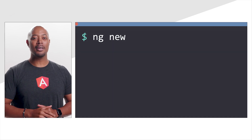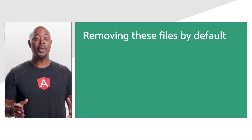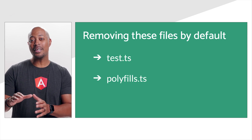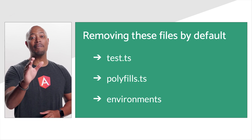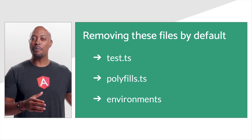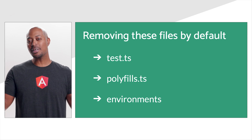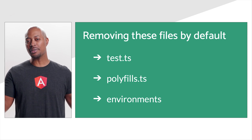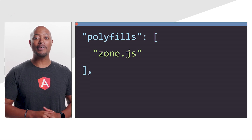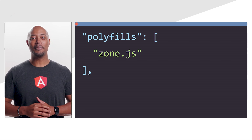We want to streamline the output of ng-new, so we're removing test.ts, polyfills.ts, and the environments file. If you need to use the environments file in your project, no problem — create it and then just add your configuration. Polyfills can now be specified directly in the polyfills section of angular.json.